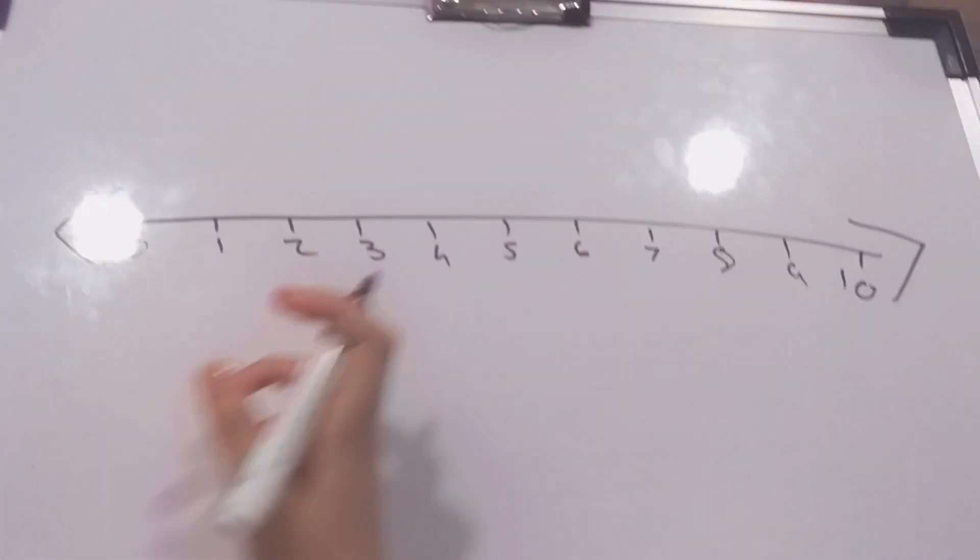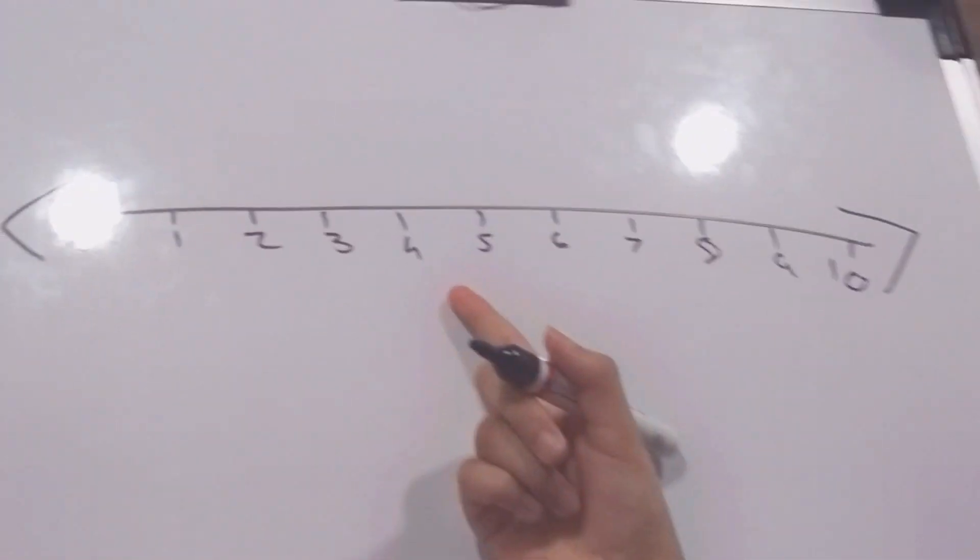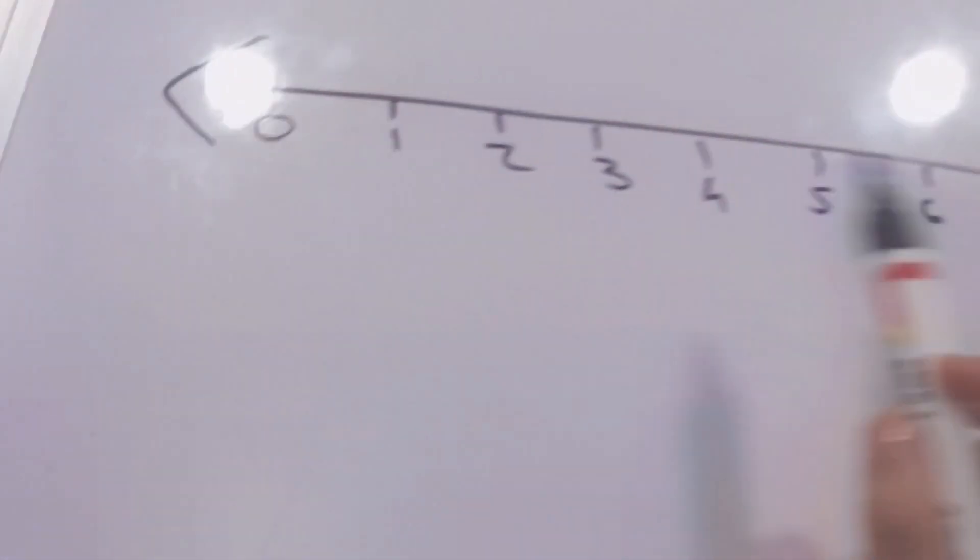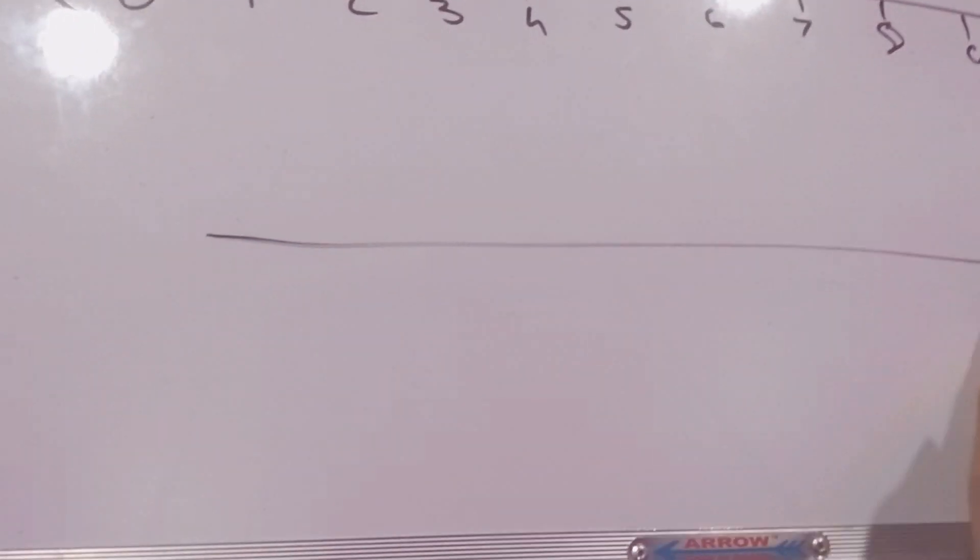Alright, so this is the number line. The first and most important thing is to have two arrows at the end of the number line. Now while I'm explaining, this is geometry.